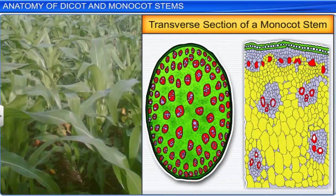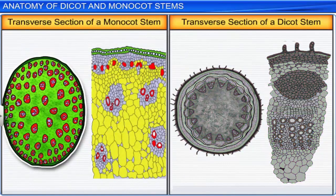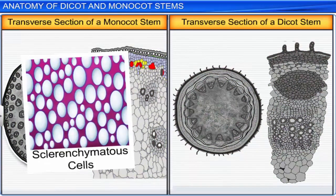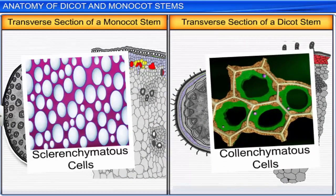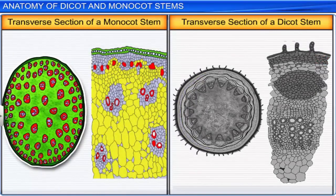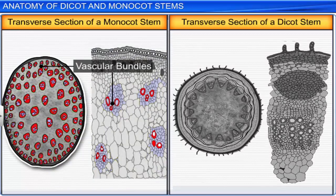Now let's study the monocot stem. The tissues of dicot and monocot stems are quite similar, but there are some differences. In the monocot stem, the hypodermis is composed of sclerenchymatous cells, while in a dicot stem it is composed of colenchymatous cells. The monocot stem has scattered vascular bundles, and their arrangement is conjoint and closed. Moreover, water-containing cavities are present within the vascular bundles. On the other hand, in a dicot stem, the vascular bundles are arranged in a ring as conjoint and open.